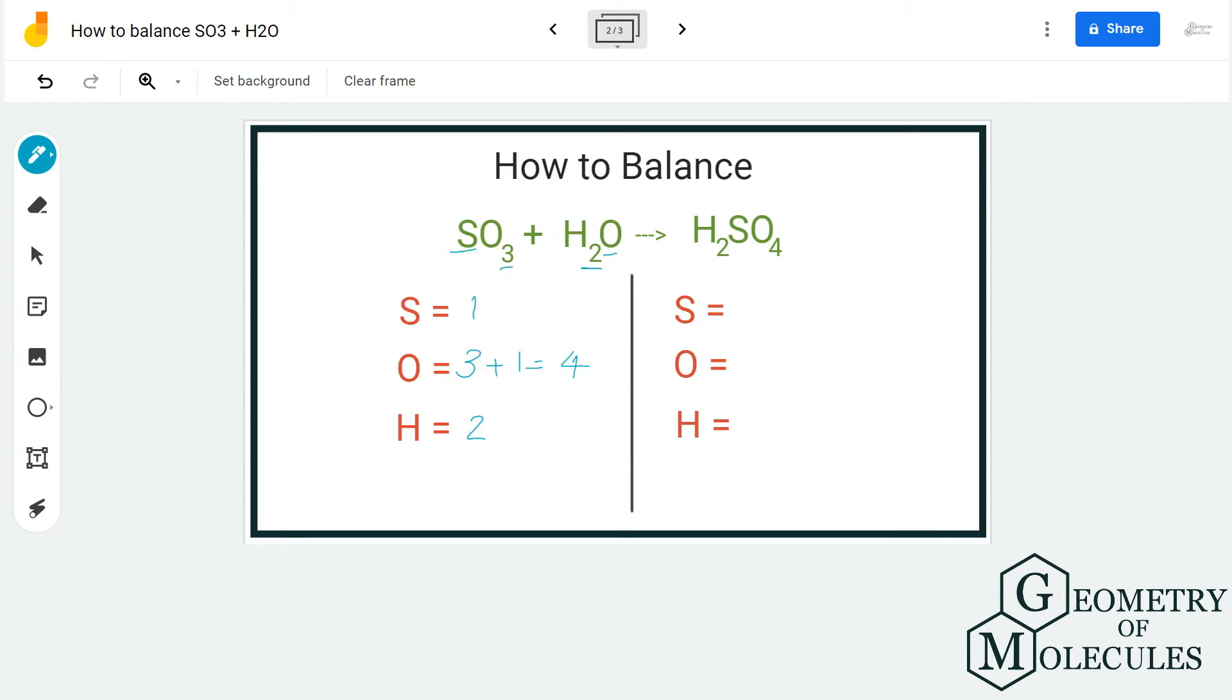atoms and the number of atoms for the reactant side. Now let's proceed to the product side. On the product side, we have one sulfur atom, four oxygen atoms, and two hydrogen atoms.